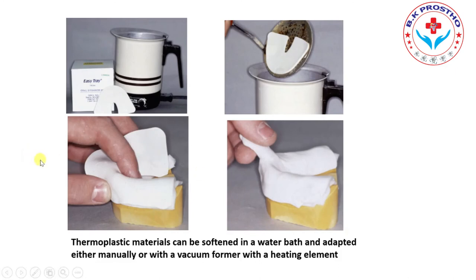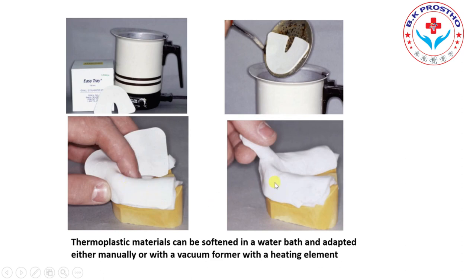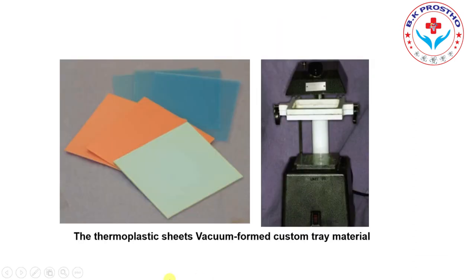Thermoplastic materials are also available. Thermoplastic materials are those that soften on heating and become hard on cooling. One such material is Easy Tray: you soak it in hot water following the manufacturer's instructions, it becomes soft, then you apply it on the diagnostic cast and manipulate it with the fingers until you get even thickness of the base plate or custom tray. For a vacuum-formed custom tray using thermoplastic sheets, you use a vacuum machine — place the model and the vacuum sheet, start the machine, and it will be fabricated in conforming form.